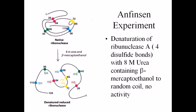Anfinsen is a pioneer who started to think about protein folding in different ways. He took native ribonuclease as his starting point and added 8 molar urea along with beta-mercaptoethanol. These are disrupting agents — beta-mercaptoethanol disrupts the disulfide linkages among protein subunits, domains, and motifs, while urea disrupts the hydrogen bonds of the protein. After addition of these agents, the native protein gets denatured into a random coil.